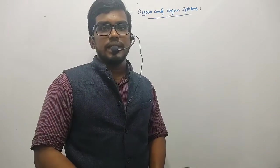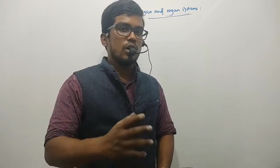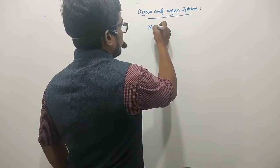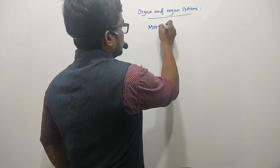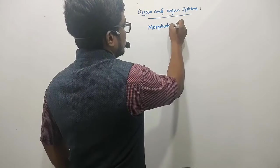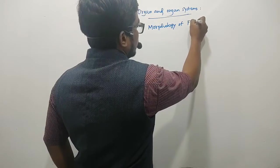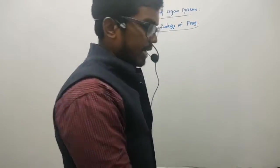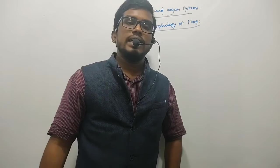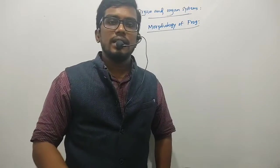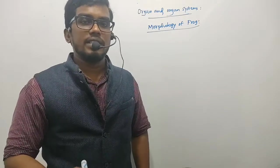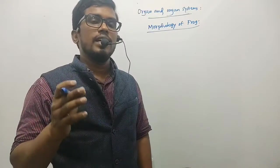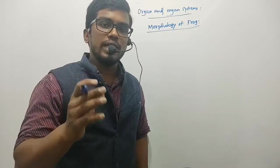Dear students, next let us move on discussing about the morphology of frog. Morphology indicates the external features, the observable features, the features which we can observe through the eyes.